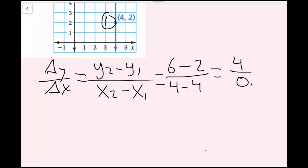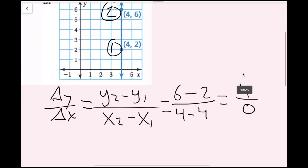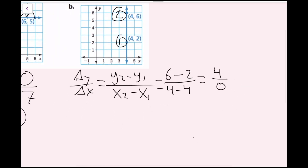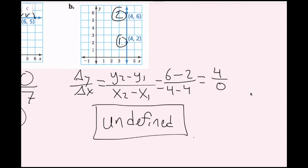In math, we call this an undefined value. This value is not defined; therefore, our slope is also undefined. We do not have a defined number to describe the slope. This is an example of an undefined slope. Notice this is a vertical line. All vertical lines, if you do rise over run, you'll end up needing to divide by zero, and you'll always have an undefined slope. So anytime you see a vertical line, you know the slope is undefined.